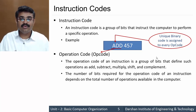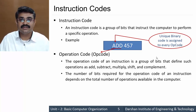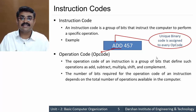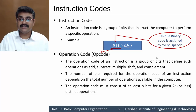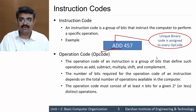The number of opcode bits is defined based on the total number of operations available in a computer. For example, if there are 16 operations, then 4 bits are needed for the opcode because 2 raised to 4 equals 16. The operation code must follow the relation that it should be at least n bits for 2 raised to n operations, though it can be less if only distinct operations are defined.